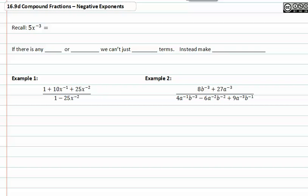In this video, we'll be working with negative exponents. You may recall that 5x to the negative three is written the same as five over x to the positive three, where x cubed is in the denominator.